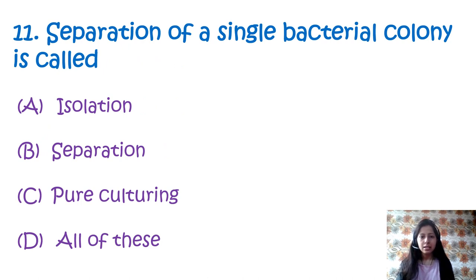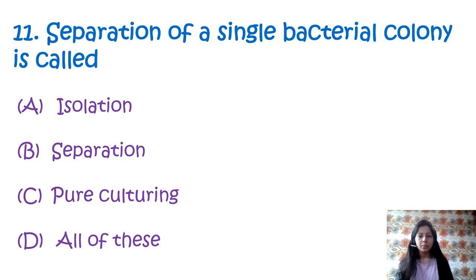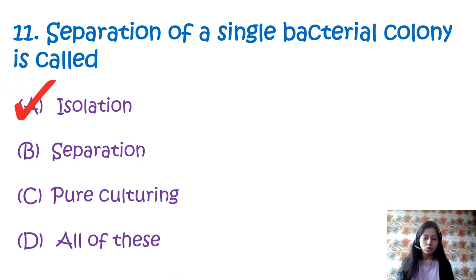Question 11: Separation of a single bacterial colony is called — option A: isolation, option B: separation, option C: pure culture, option D: all of these. The answer is option A, isolation. Isolation is a process used to obtain a pure culture of bacteria from a mixed culture.